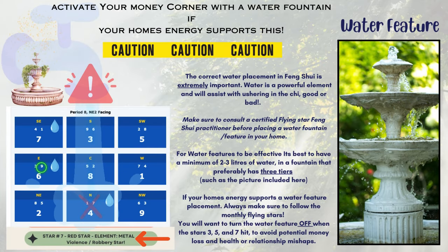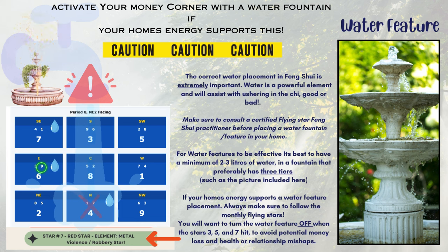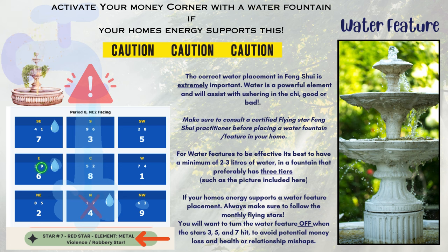Another really powerful way to usher in the wealth energy is a water fountain. Now this one's a bit of a touchy topic because water fountains can only be placed in certain areas of the home. Generally speaking, you can place a water fountain in the east, the north, and the southeast sectors, but that does not apply to everyone. You really want to be careful with the water fountain and be aware of what you're activating, because water is one of the most powerful ways to usher in chi — it can bring a lot of good financial abundance, but it could also trigger a lot of financial loss, health issues, and relationship issues as well.